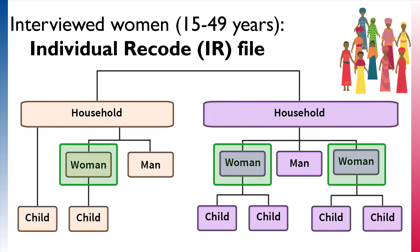In the Individual Recode file, or the IR file, the unit of analysis is women who were interviewed, usually all women ages 15 to 49. In some countries only women who have been married are interviewed. If this is the case, only ever-married women age 15 to 49 are in the IR file. Many of our indicators and variables of interest use the women as a unit of analysis.